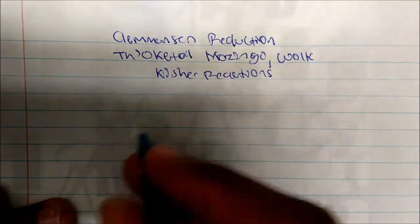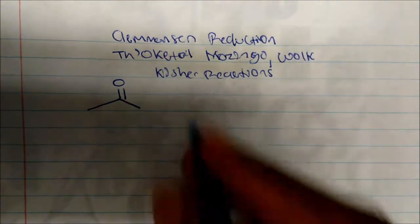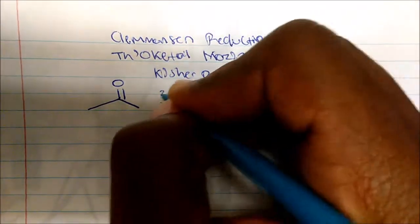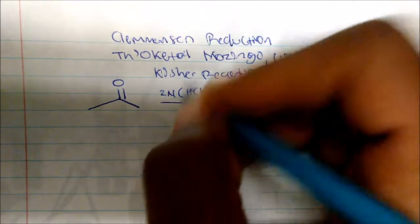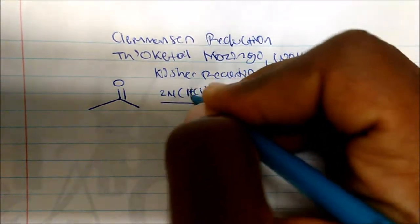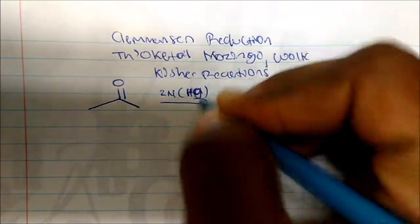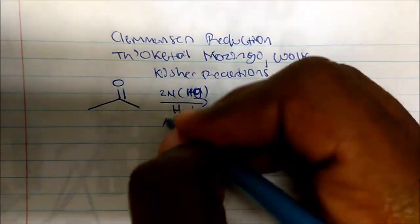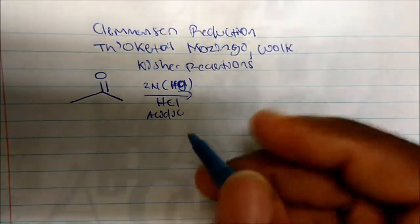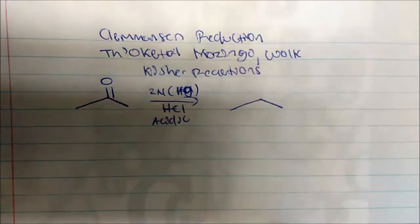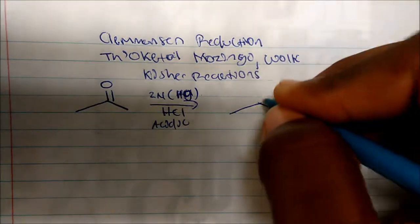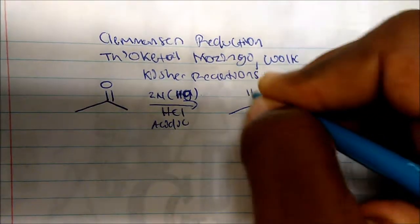In a Clemmensen reduction, if I take acetone — any carbonyl, a ketone or aldehyde — and I add zinc amalgam and HCl, this is in acidic conditions. What this does is that it reduces my ketone and I get my alkane.